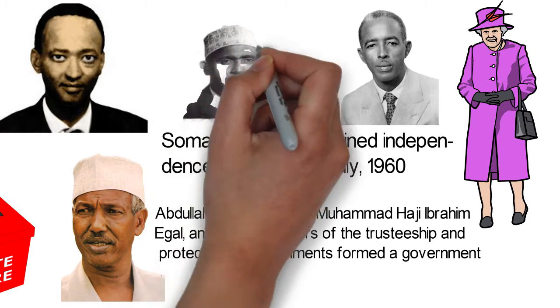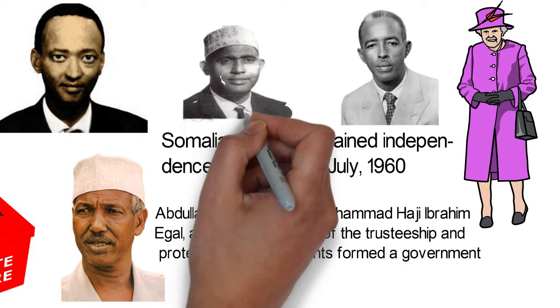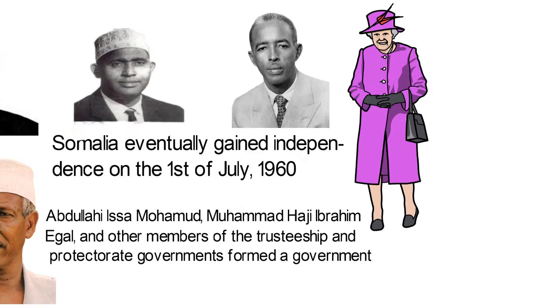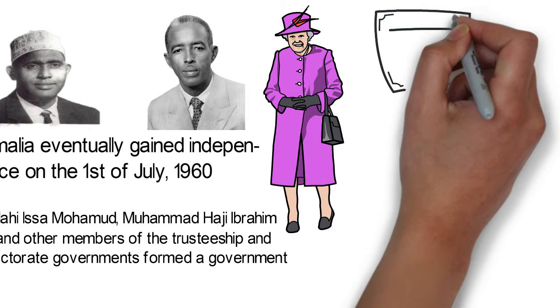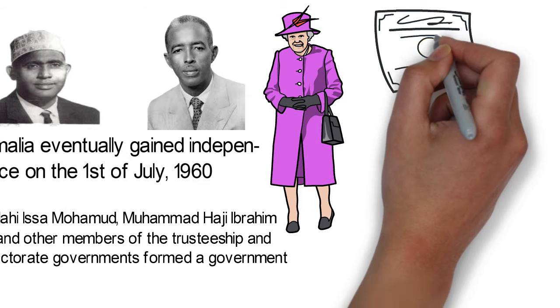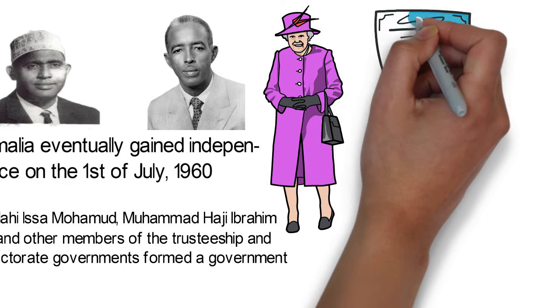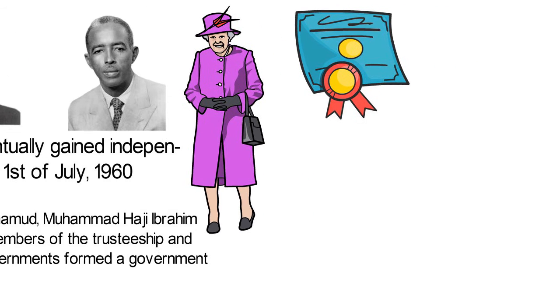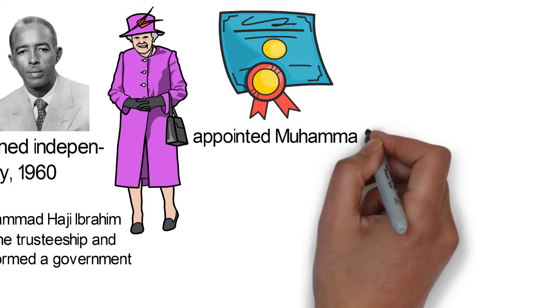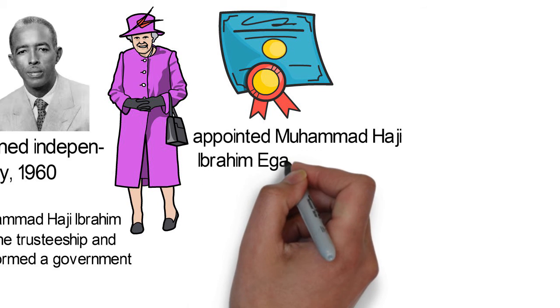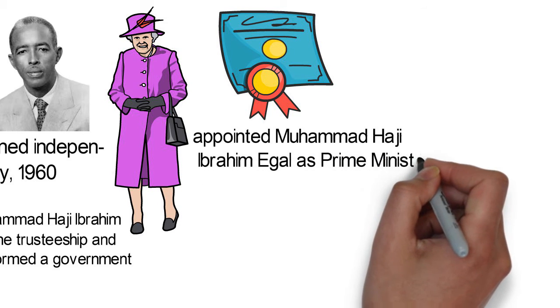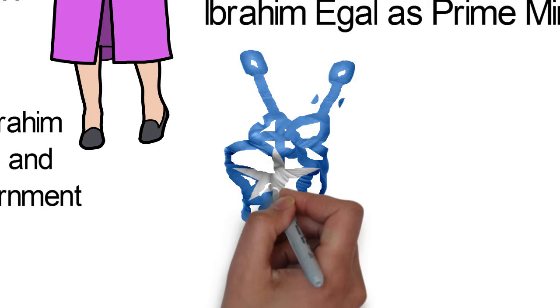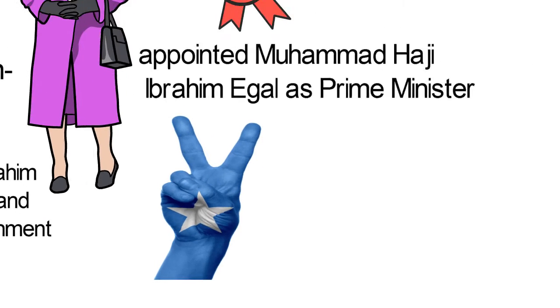Abdurashid Ali Shemake served as Prime Minister and later became President from 1967 to 1969. On the 20th of July 1961, after a popular referendum, the Somalians authorised a new constitution that was first drafted in 1960. In 1967, Shemake then appointed Muhammad Haji Ibrahim Egal as Prime Minister. Egal would later become the President of the Autonomous Somaliland Region in northwestern Somalia.